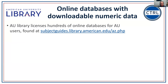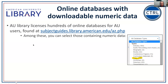The library licenses hundreds of online databases for AU users that deal with all kinds of content — journals, e-books, videos, and more. Among those, you can select the subset that contains numeric data using a pulldown for database types. Just over a hundred of our databases have numeric data in some form — meaning something you could put into a spreadsheet and calculate something on. These are also identified with a spreadsheet icon with a down arrow in the database list, indicating downloadable data from an external vendor.